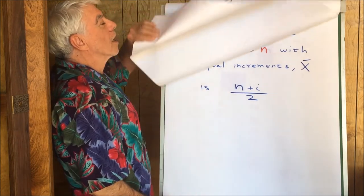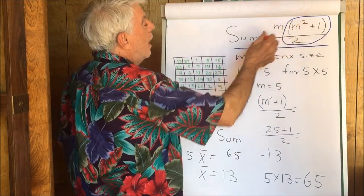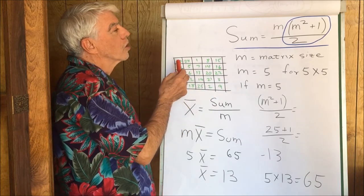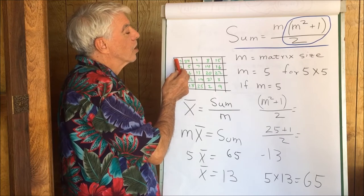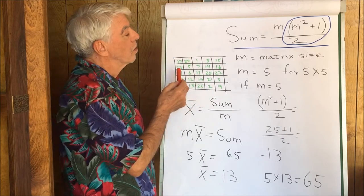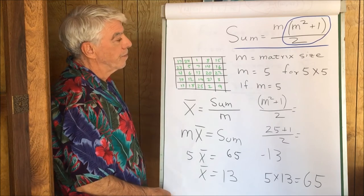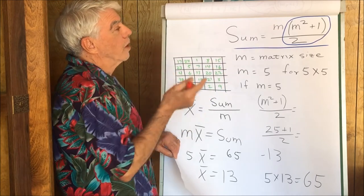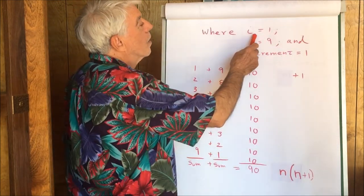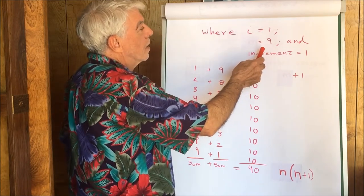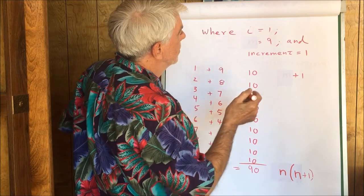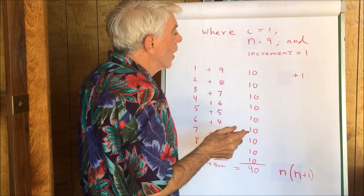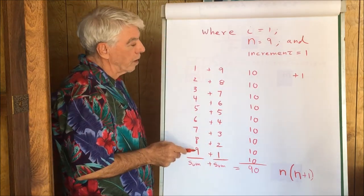What's not clear is why the average of all of the numbers should give us the average of each individual row or column or diagonal. For example, in this row, the number 25 doesn't appear. All right, where I is 1, that's the first number, and the last number is 9, and the increment is 1, we can write down the series of the numbers.